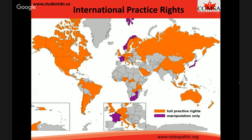US-trained DOs have full practice rights in Canada as well. On the map, countries in purple allow American DOs to do manual manipulation but not full medicine. Countries in orange have practice rights with at least one physician present. Gray countries have unknown stances. If you plan to practice overseas, make sure the country you want to settle in will recognize your degree and practice rights. For more questions, you can always contact AACOM — the American Association of Colleges of Osteopathic Medicine — at osteopathic.org.